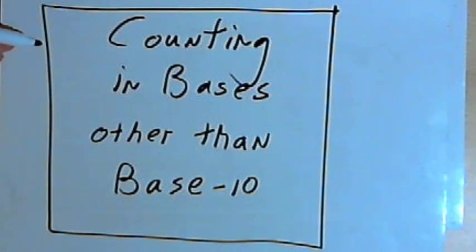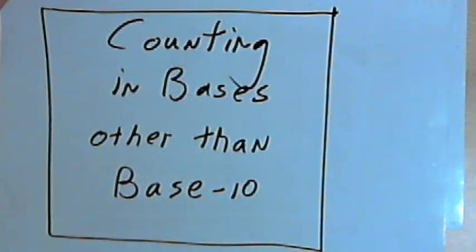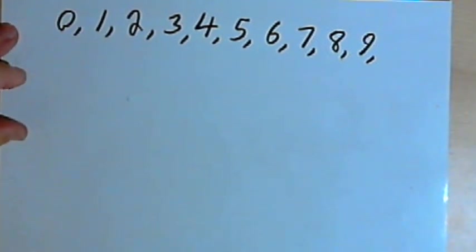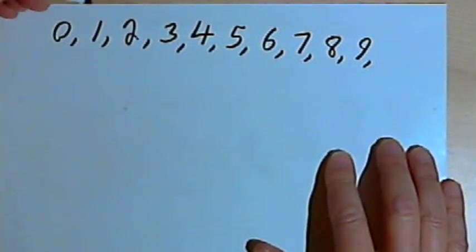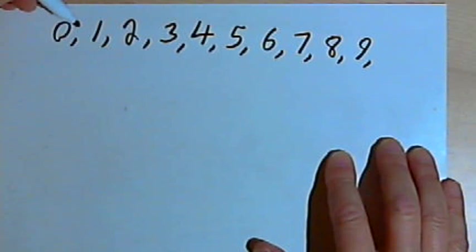This video is going to be about counting in bases other than base 10. What I want to do, though, is start by taking a look at base 10. So in our own base 10 system, we have 10 digits. The digits go from 0 to 9, and there is no single digit for the number 10.